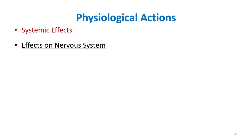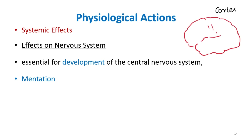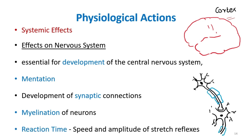In the nervous system, thyroid hormone is very important for the development of the central nervous system and for mentation. That is why in congenital hypothyroidism children are usually mentally retarded. It helps in the normal development of the cerebral cortex, the development of synaptic connections, and myelination of neurons. It also affects reaction time — the speed and amplitude of stretch reflexes — which is why in hypothyroidism we generally see a sluggish ankle jerk.